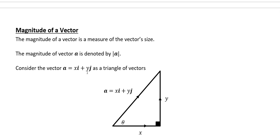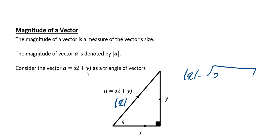Next we look at the magnitude of vectors, which is just the size of the vector. We find this using Pythagoras's theorem. The magnitude is denoted using modulus signs — two vertical lines. If our vector a is given as the column vector (x, y), then the modulus of a is equal to the square root of x squared plus y squared.